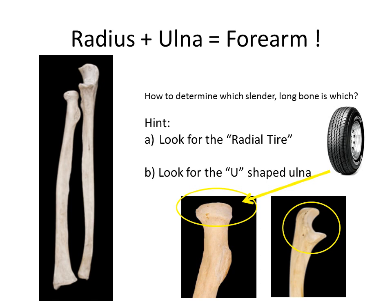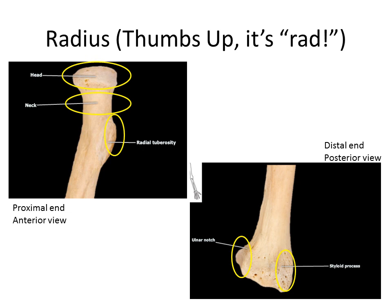The forearm is the area between elbow and wrist and is made of two structures: the radius and the ulna. Both are slender long bones, so to tell them apart: first, look for the structure that looks like a radial tire — that's the head of the radius. Alternatively, look for the U-shaped trochlear notch — the U stands for ulna. Another memory trick: give yourself a thumbs up and say 'it's rad' — this reminds you that the radius is always on the thumb side of the forearm.